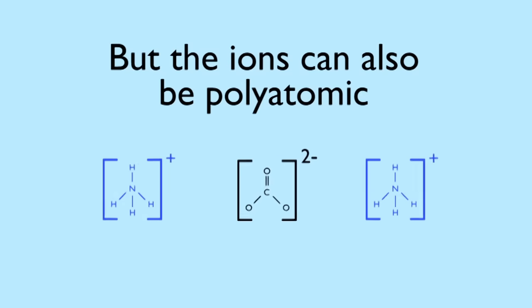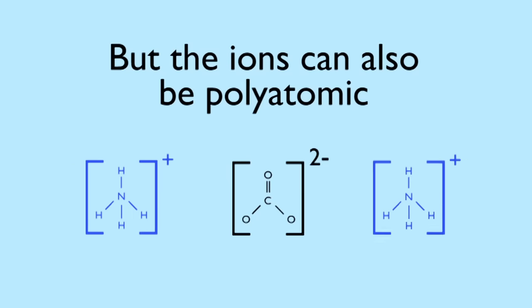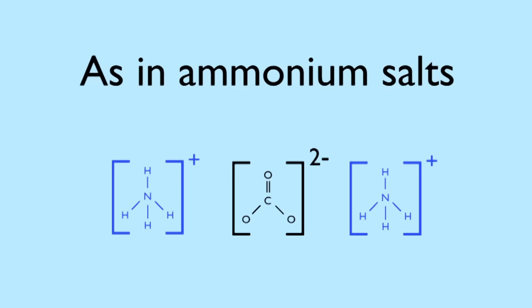The ions can be polyatomic, that is made up of more than one atom. A common example of this would be ammonium salts.